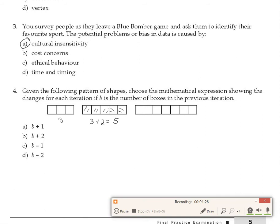The third iteration has seven boxes, which is five plus two. So the pattern is: each next iteration adds two more boxes to the previous count. Given that B is the number of boxes in the previous iteration, the next iteration is B plus two. The correct answer is B.